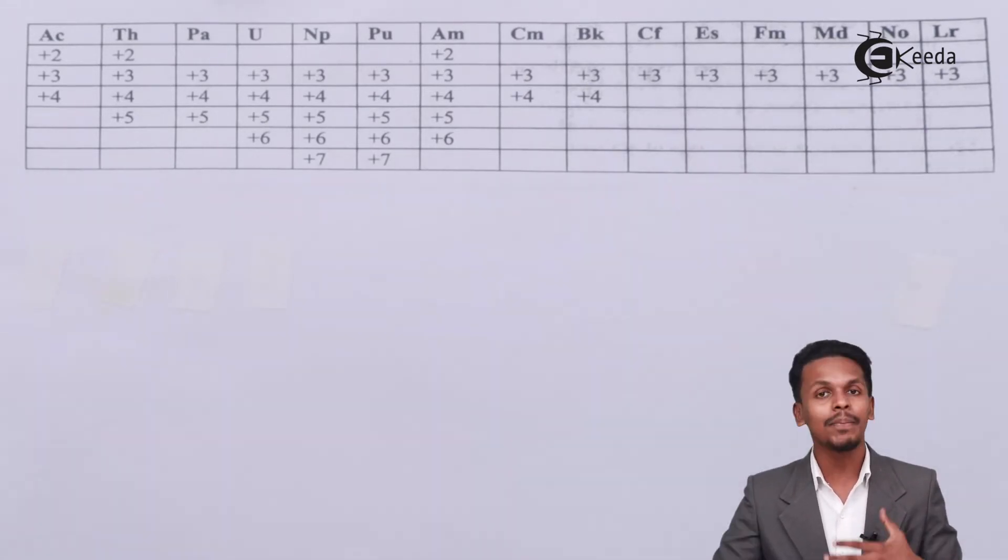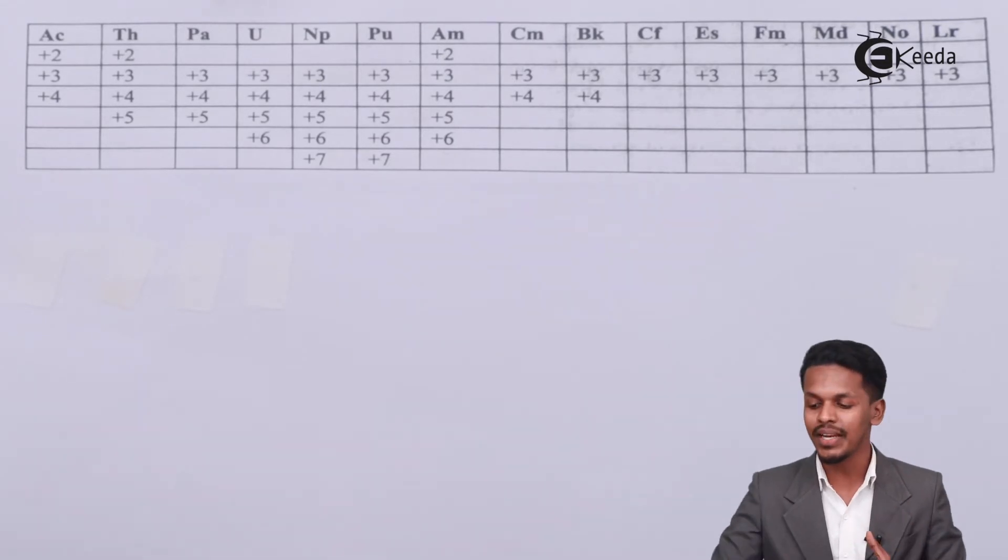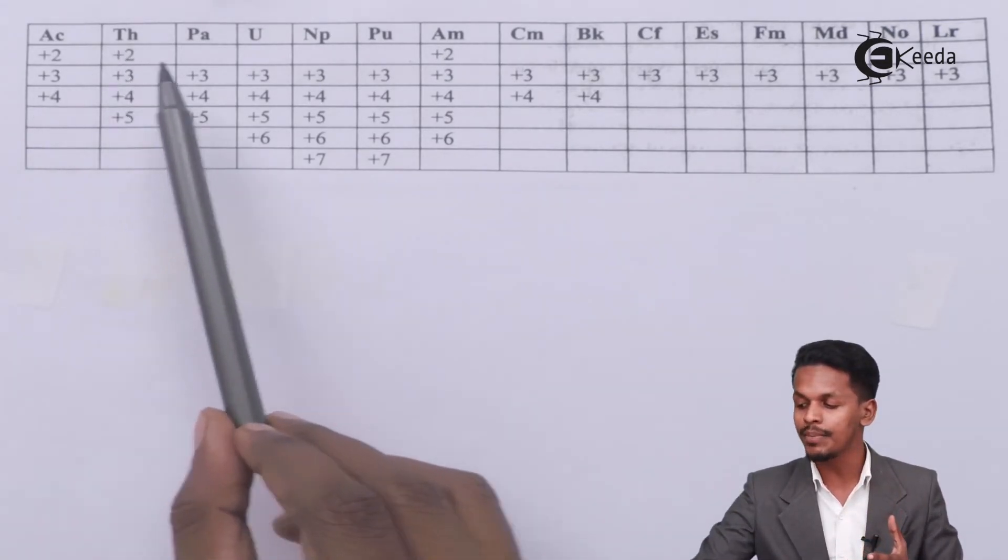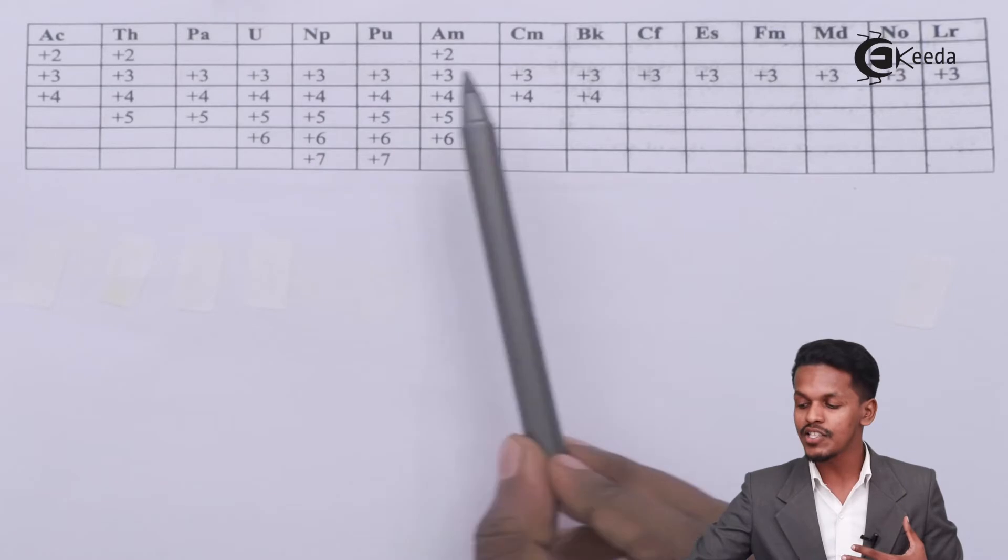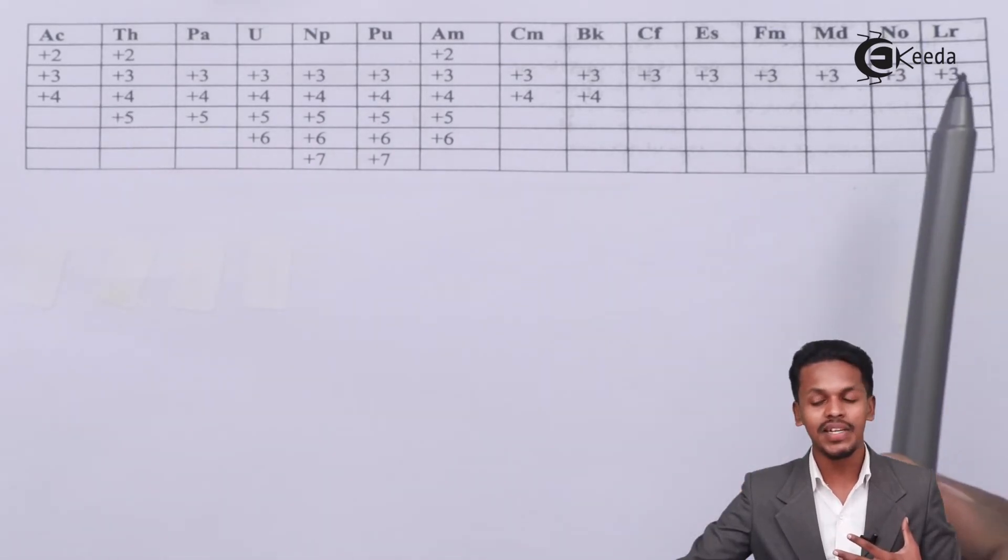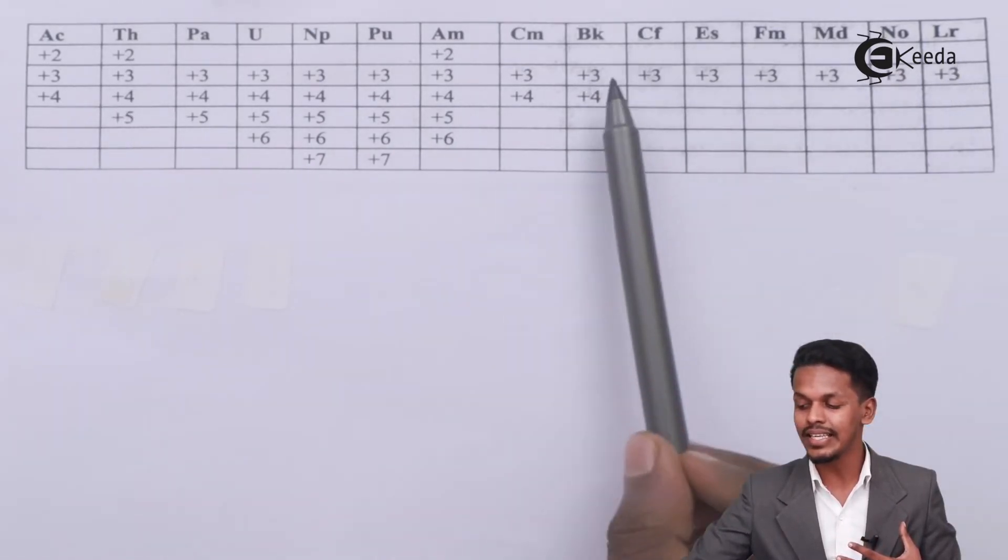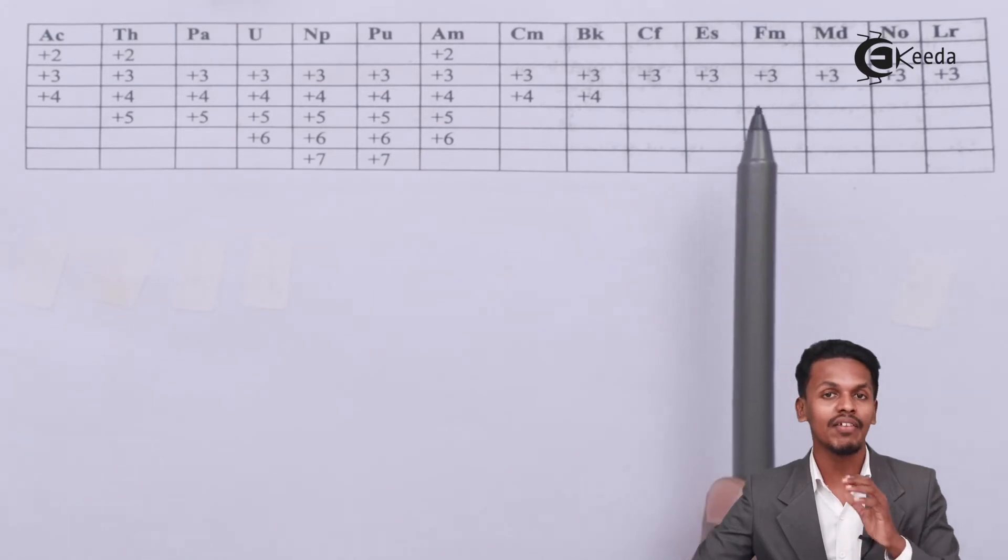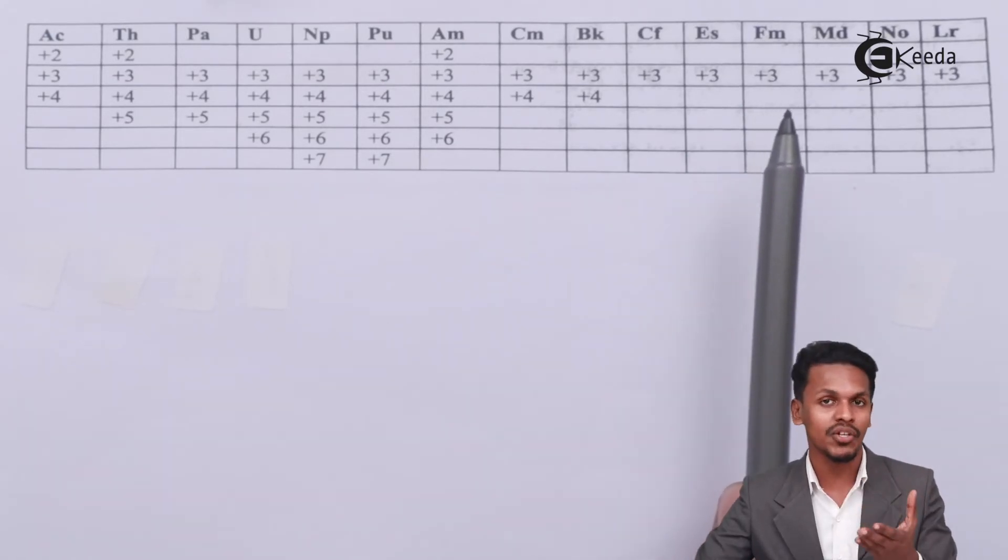The +3 oxidation state is very stable if we move from thorium to lawrencium. Across this period or across these elements, these are the members which are having more stability towards the +3 oxidation state.